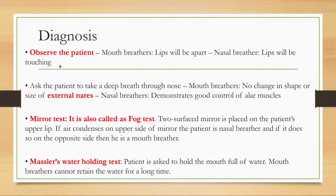To diagnose mouth breathing, there are many diagnostic methods. The first is observing the patient: mouth breathers have lips apart, whereas nasal breathers keep their lips closed as they breathe through the nose. Another method is asking the patient to take a deep breath through the nose — in mouth breathers, there will be no change in shape or size of the external nose during inhalation and exhalation.